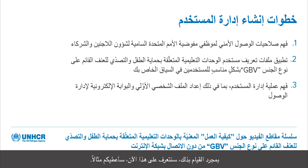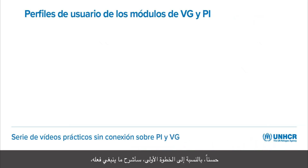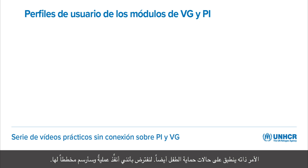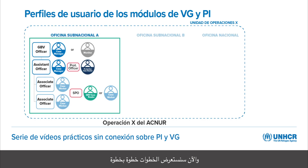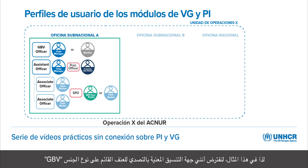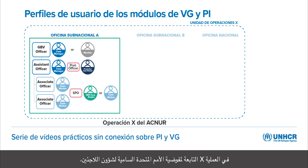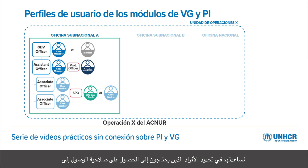For step one, I'm going to use a GBV example, though you would do exactly the same for child protection. Pretending to be the GBV focal point for UNHCR's Operation X, I'll work in combination with colleagues and registration focal points responsible for the deployment of V4 to identify individuals who need to be granted access to the GBV or child protection modules. In the first step, I'm mapping out those individuals working directly on GBV case management.